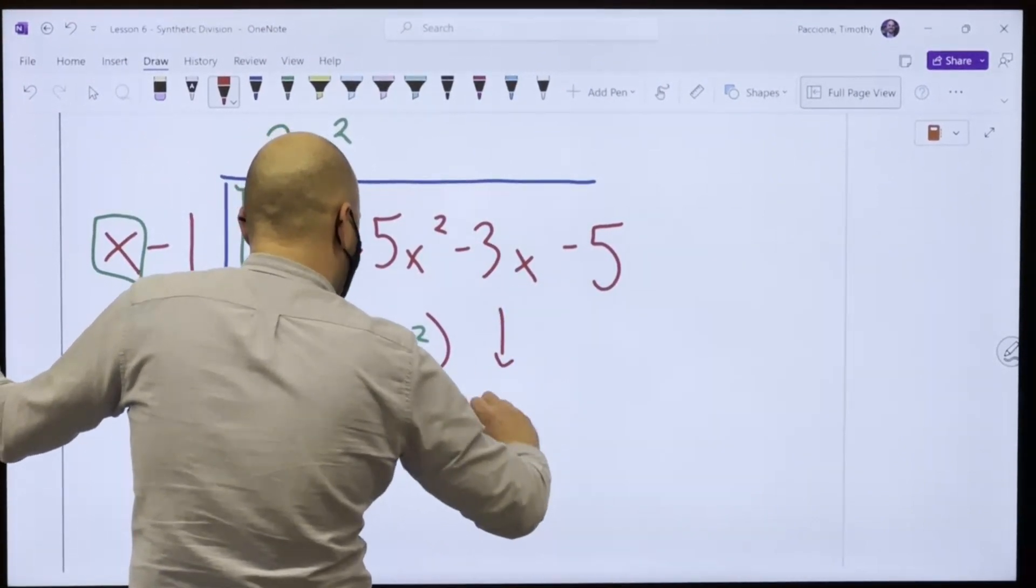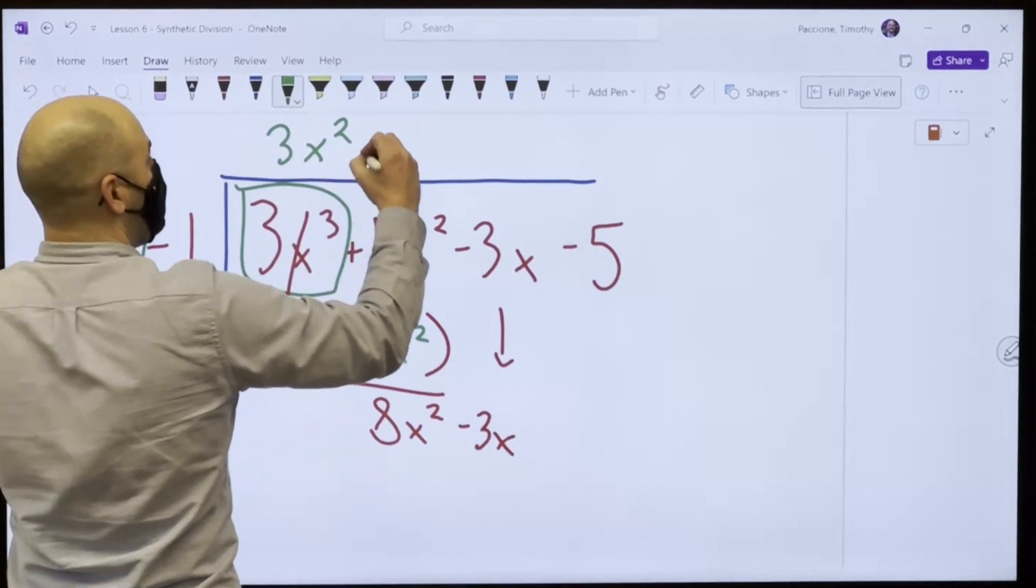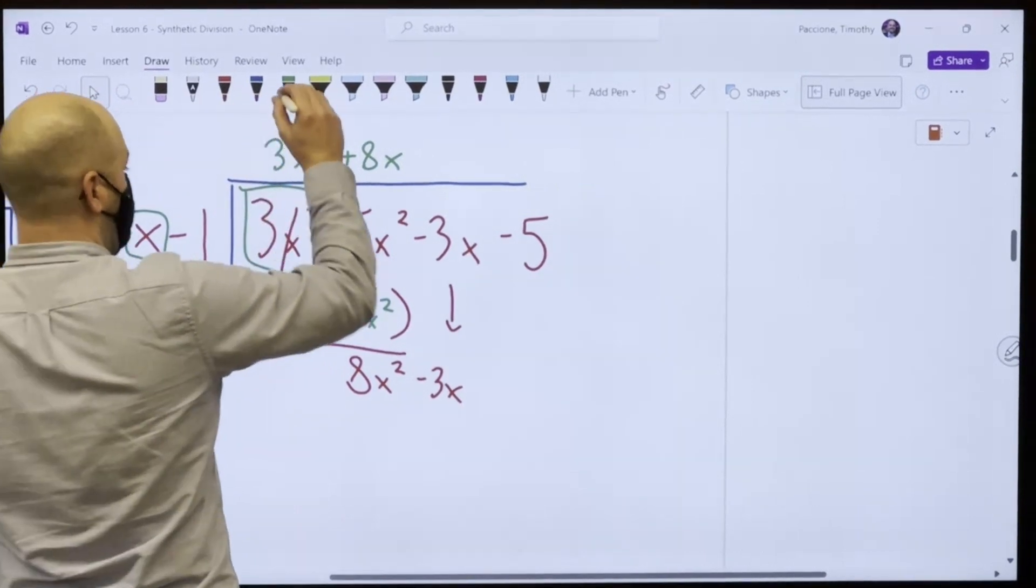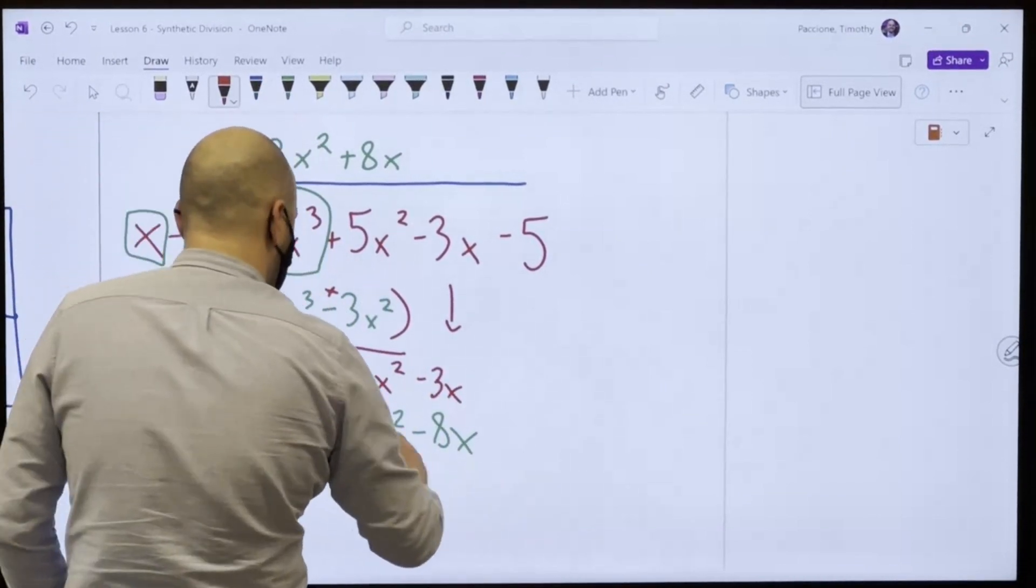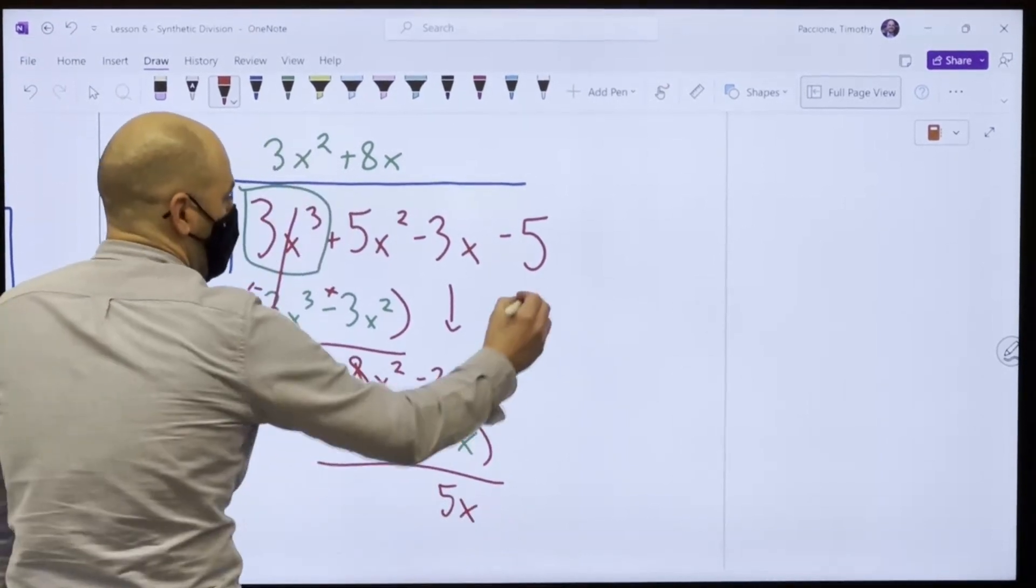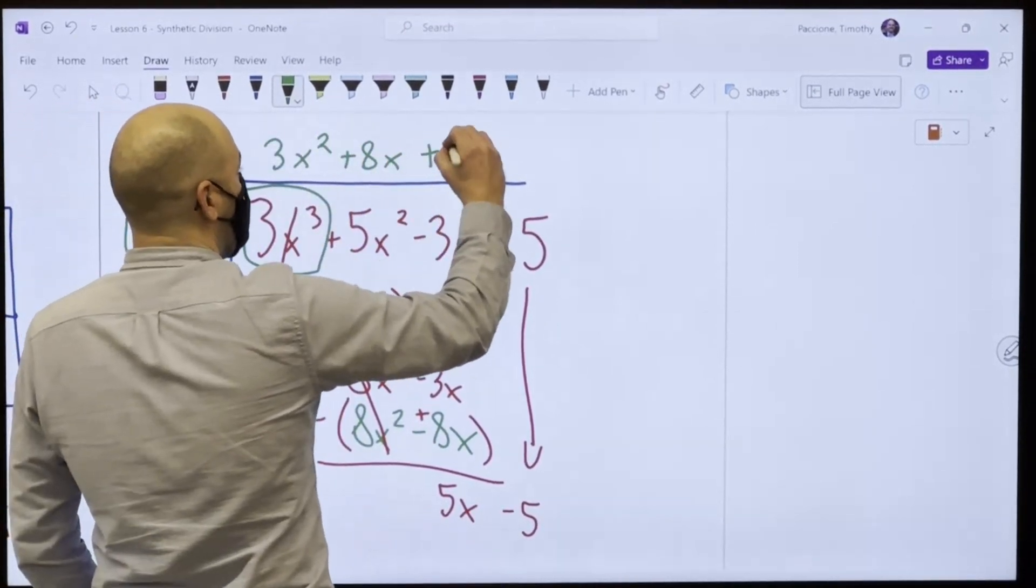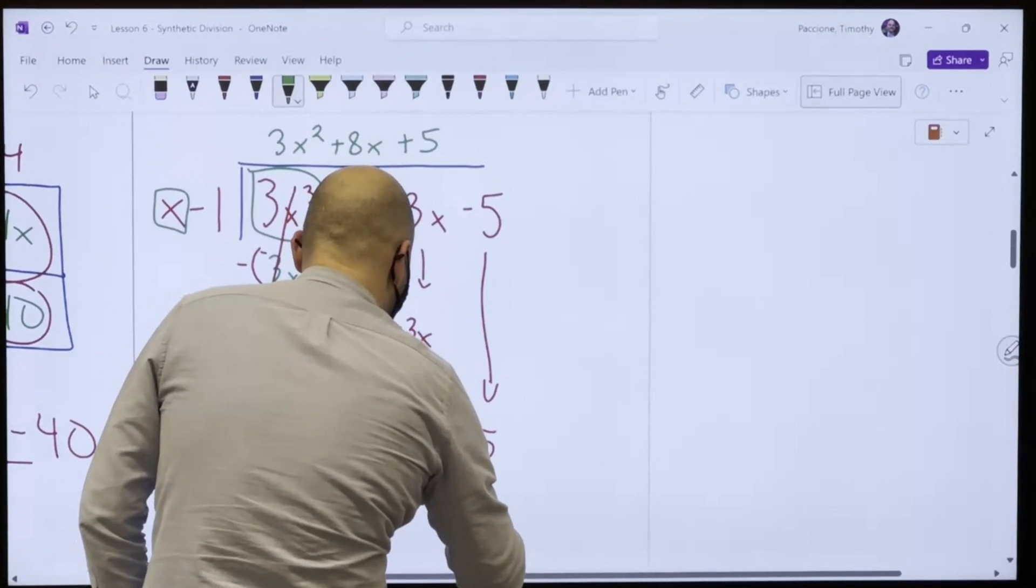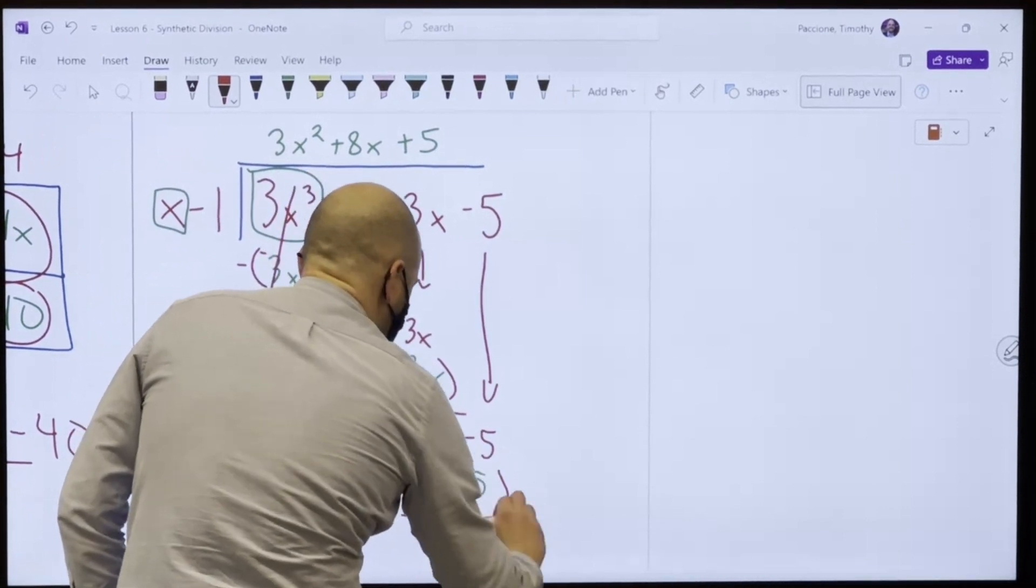And then I bring down the next piece minus 3x. x times what is 8x squared? 8x. And I repeat the process. 8x times x minus 1 is 8x squared minus 8x. Subtract. This cancels. This becomes positive and I get 5x. Bring down the minus 5. x times what is 5x? 5.